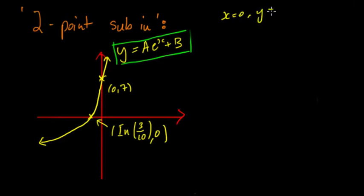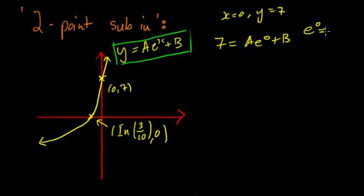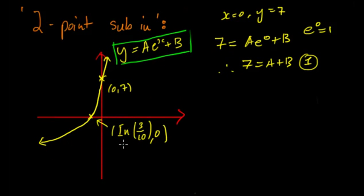First, looking at the point (0, 7): x = 0 and y = 7. Substituting in, we get 7 = ae^0 + b. Remember, e^0 is not 0 but rather e^0 = 1, therefore 7 = a + b. That's the first equation we get from this information.